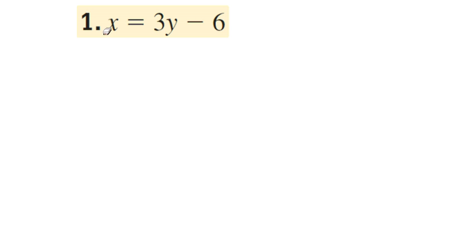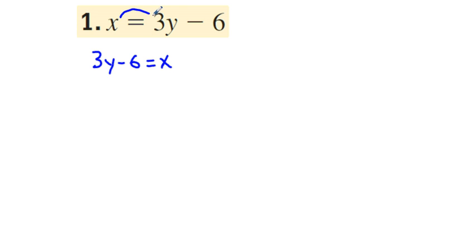In exercise 1, we have the equation x equals 3y minus 6. We're going to use the symmetric property of equality and rewrite this equation as 3y minus 6 equals x. We can switch sides because of that symmetric property of equality, and to solve for y, we want the variable we're trying to solve for on the left side.